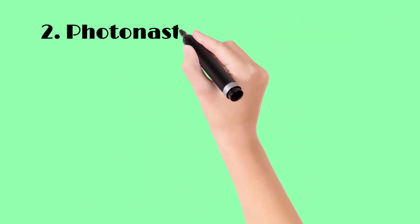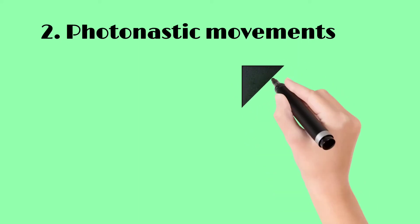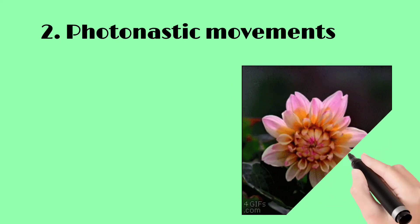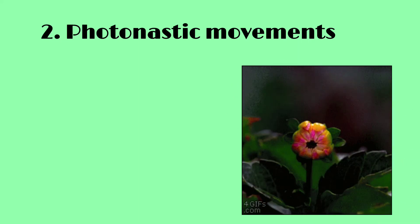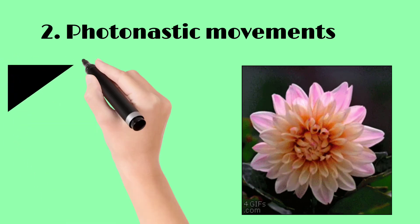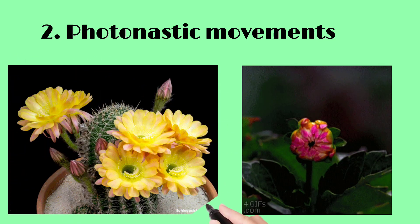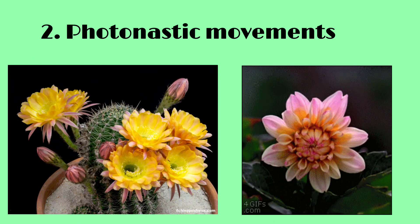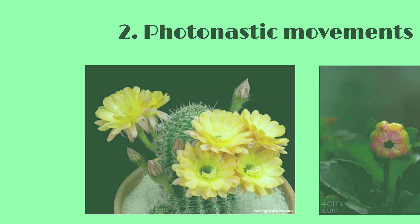The second type is photonastic movements. These are non-directional movements in response to light. For example, petals of a flower open in bright light during the daytime and close when it gets dark.